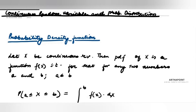When we talk about continuous random variables, these are those random variables which can take values like one or two, but they can also take values in between — like 1.1, 1.2, and so on. When my random variable is defined for all possible values within a particular interval, then it is known as a continuous random variable.